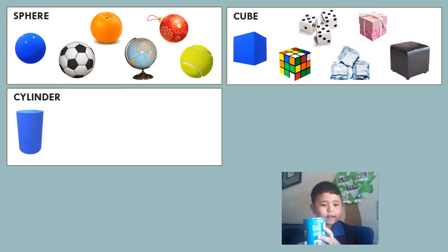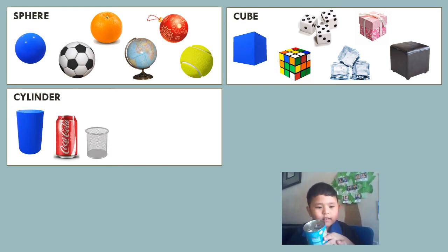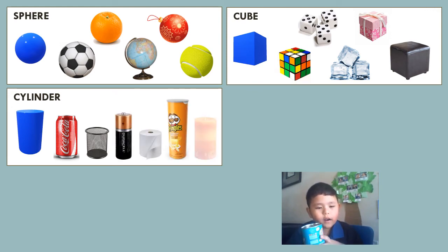The cylinder is like a stretched out circle. The bottom and top are flat and in the shape of a circle. Cylinders are everywhere. And the best example of a cylinder is the can.